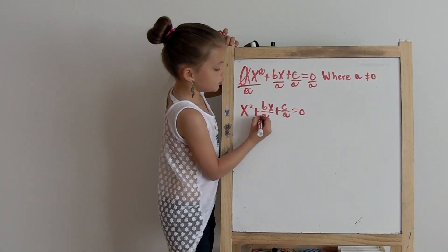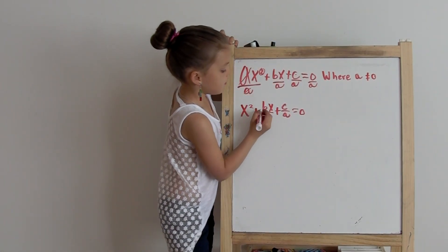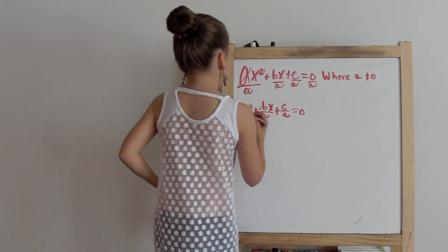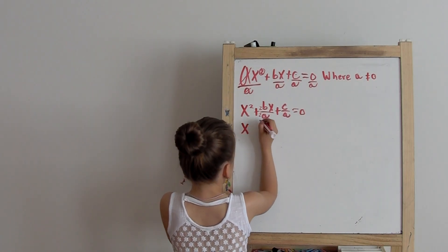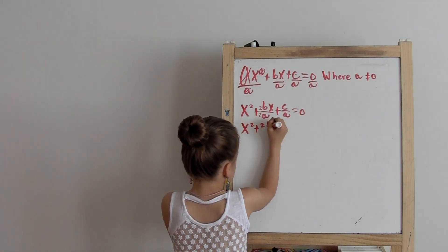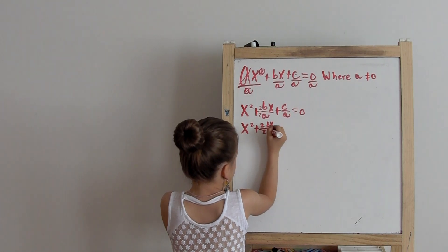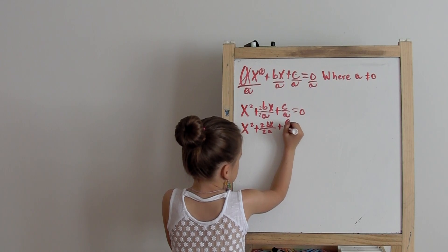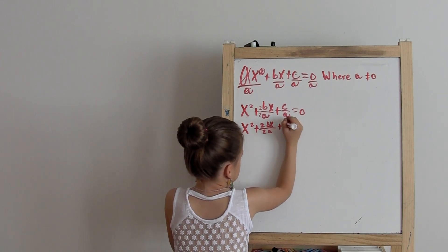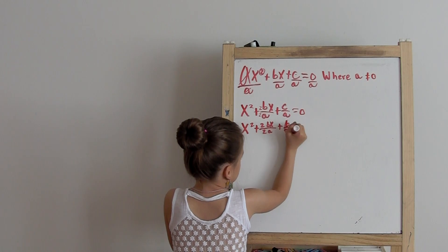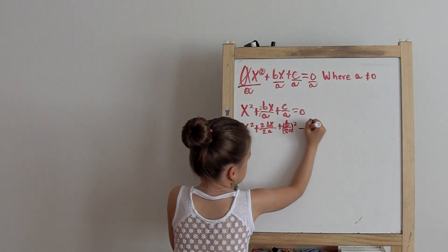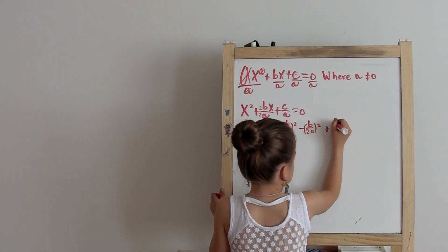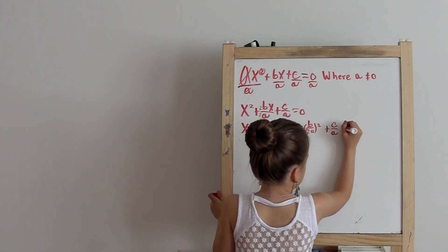So now we need to divide this term and multiply it by 2. Now we have x squared plus 2bx over 2a plus c over a plus b over 2a squared minus b over 2a squared plus c over a equals 0.